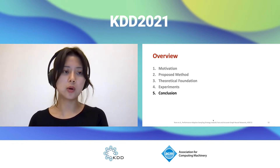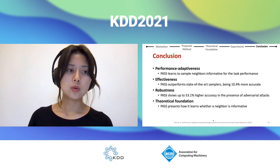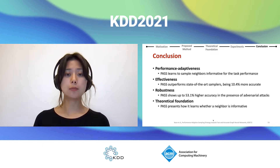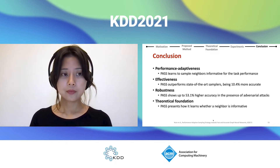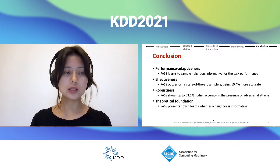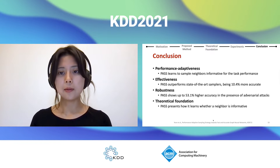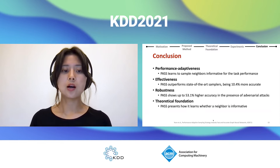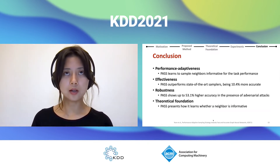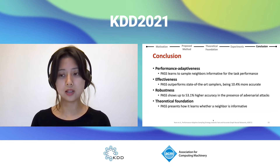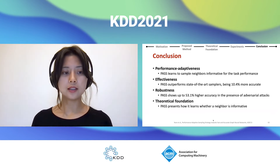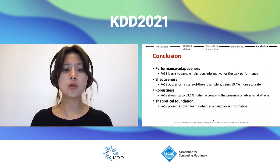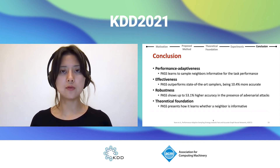To conclude: we propose PASS, Performance Adaptive Sampling Strategy, which learns to sample neighbors informative for the target task. PASS is effective on real-world datasets, being up to 10% more accurate and showing up to 53% higher accuracy than state-of-the-art baselines in the presence of adversarial attacks. Finally, we provide a concrete theoretical foundation for our sampling policy, showing how it learns whether a neighbor is informative. Thank you for listening and I'm happy to answer any questions.